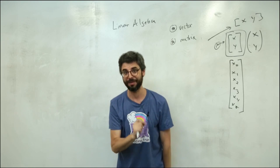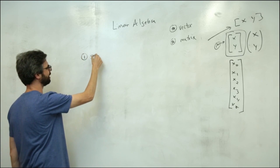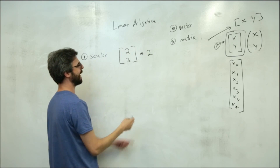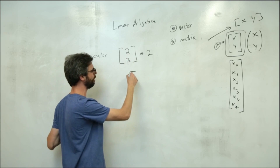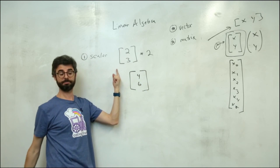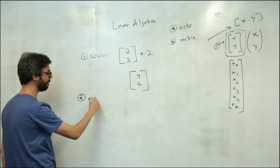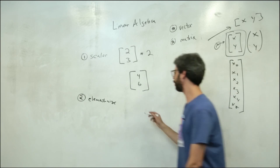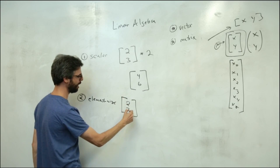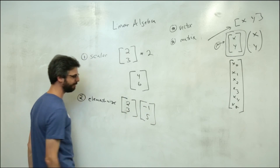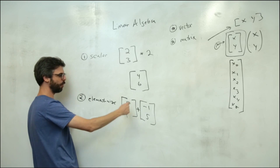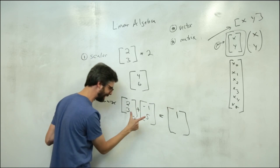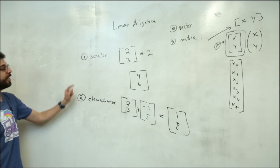We can do math with vectors, and there are a few different kinds of operations. There's the scalar operation — if I have the vector [2, 3] and multiply by the number 2, I take that scalar value and multiply it by each component, giving me [4, 6]. There are also element-wise operations. If I have a position vector [2, 3] and a velocity vector [-1, 5], I add element-wise: 2 + (-1) = 1, 3 + 5 = 8, giving [1, 8].